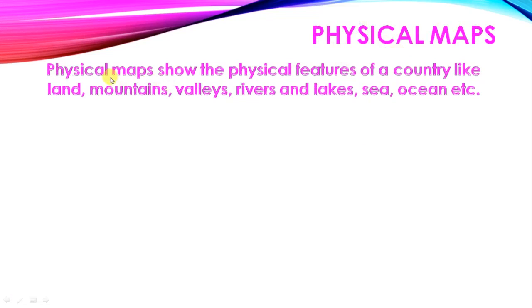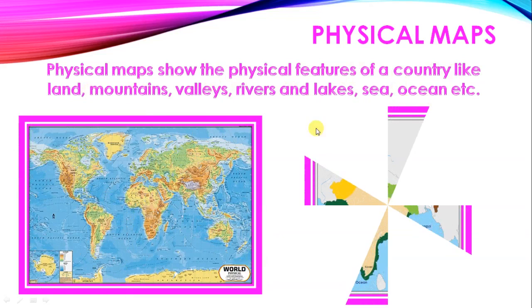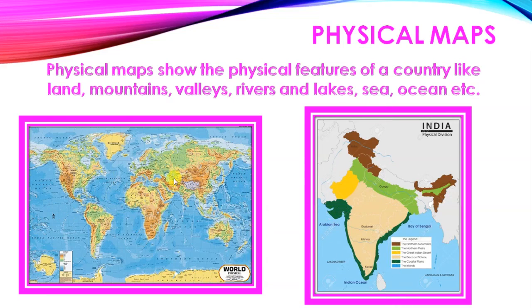Physical map. Physical map shows the physical features of a country like land, mountains, valleys, rivers and lakes, seas, oceans, etc. You can see in this picture. Oceans are there, land part is there. Mountain part, plains, desert, plateaus.